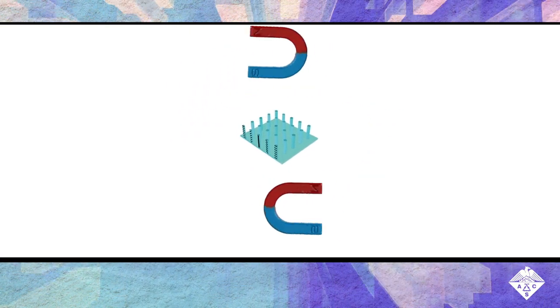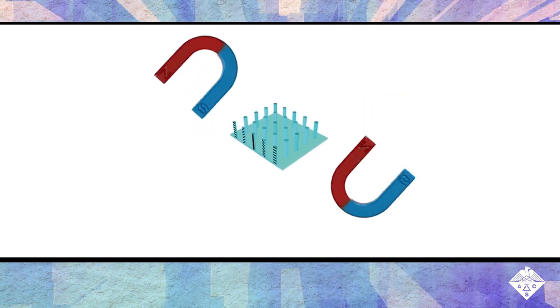The team produced a magnetic field by rotating magnets, which caused the artificial cilia to whip back and forth.